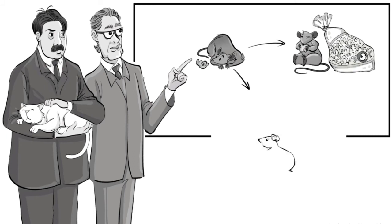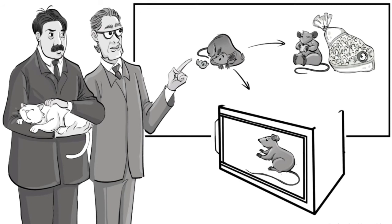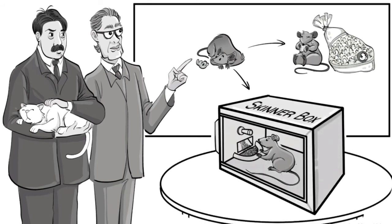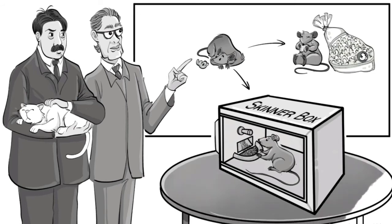To test this, he placed a rat inside an operant conditioning chamber, which later became known as the Skinner box. Among other things, inside the box was a lever that would release food when pressed.